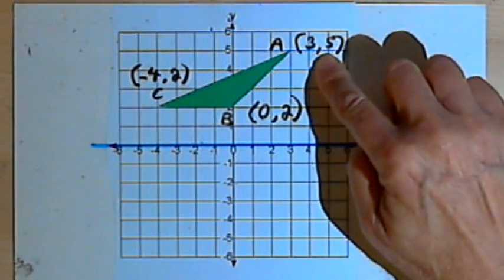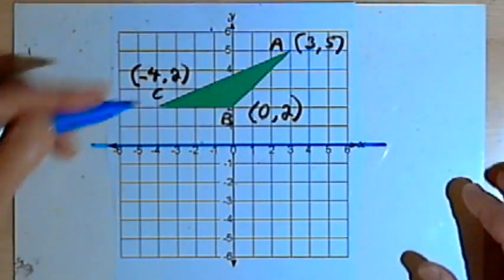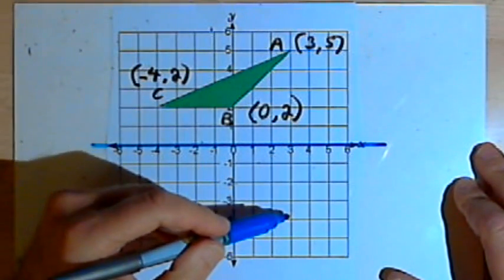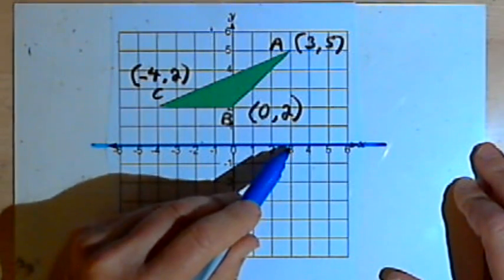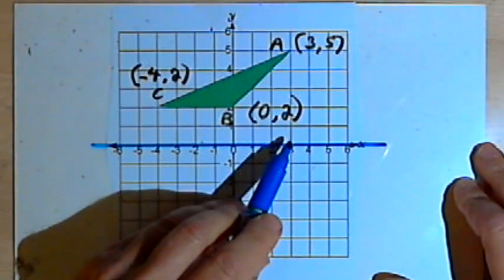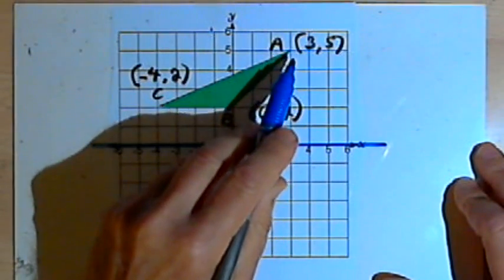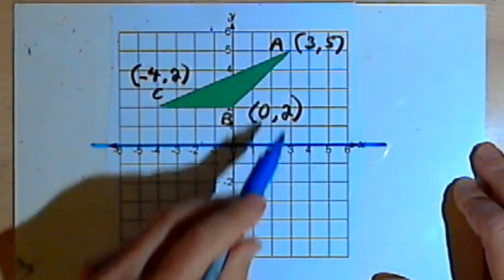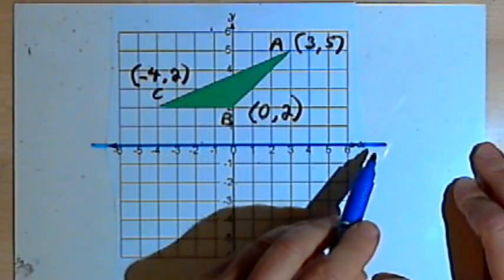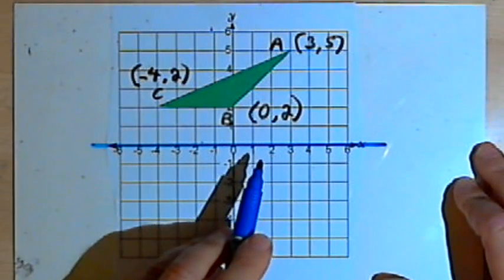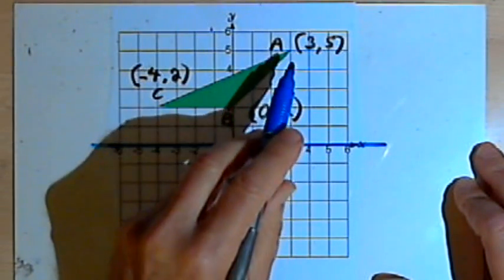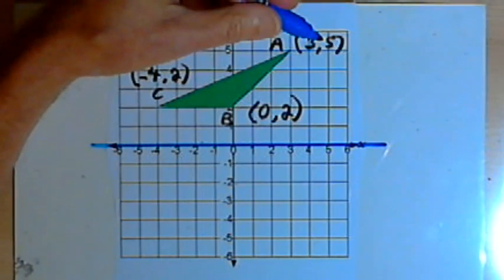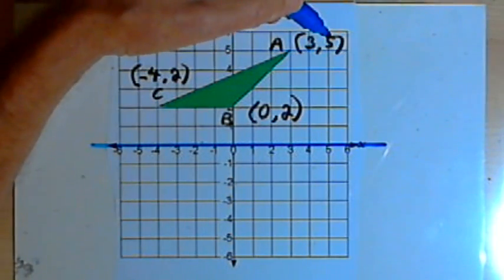I want to start out with point A. Now remember, when you reflect an image, the distance of the reflected image from the line of reflection is going to be the same as the distance of the original to the line of reflection. So in other words, the distance that point A prime is going to be from this x-axis will be the same as the distance that A is from the x-axis. Now I've got these coordinates here, and that 5 tells me that point A is 5 units away from the x-axis.